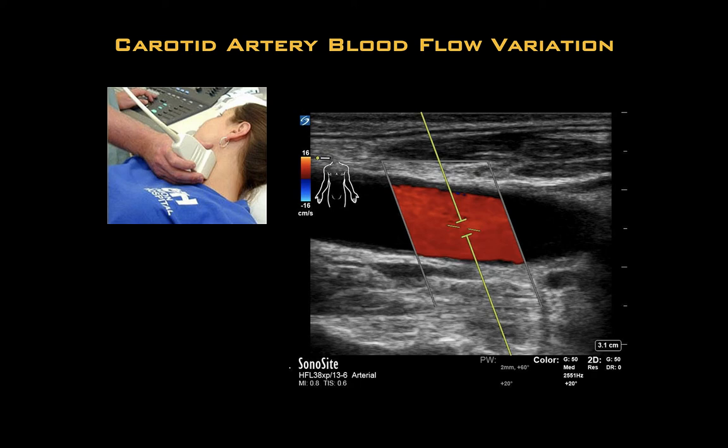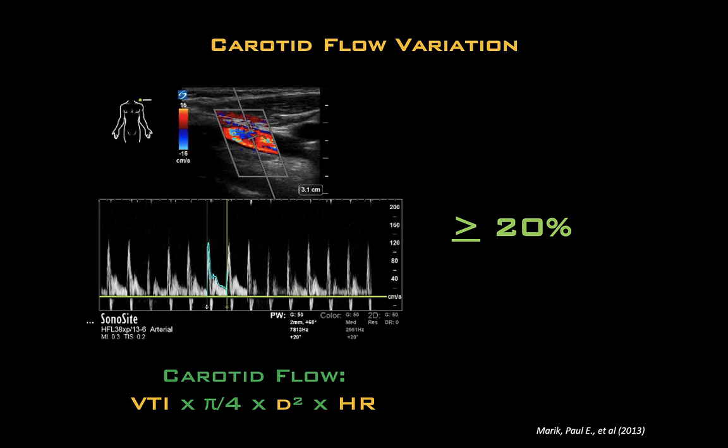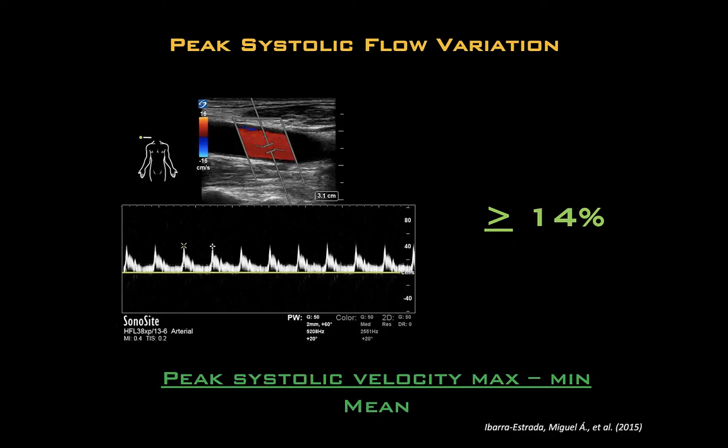This will allow you to measure the common carotid artery VTI beat to beat. Using this along with the diameter will allow you to calculate the carotid blood flow with this equation. Next, repeat these steps after a passive leg raise or a fluid bolus. According to a study in 2013, a carotid blood flow increase by 20% or more following a passive leg raise was indicative of volume responsiveness with 94% sensitivity and 86% specificity. The formula for carotid blood flow can be a bit cumbersome, so you can instead look at respiratory variation in carotid peak systolic velocity. Recent data suggests a 14% increase or more in pulse variation is suggestive of volume responsiveness with sensitivity and specificity exceeding 86%.